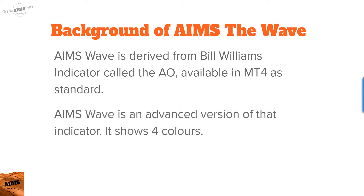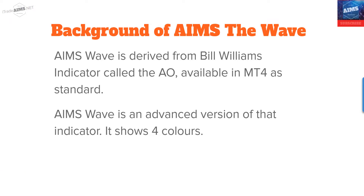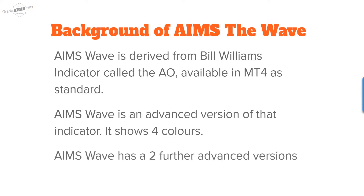AIMS Wave is an advanced version of that indicator. It shows four colors, whereas the AO is two colors — and the change of color in the AO can be confusing, because it can be below the zero line and turn red. If you have the four-color AIMS Wave, it gives you four different types of information. AIMS Wave also has two further advanced versions, which I'll touch on briefly at the end.